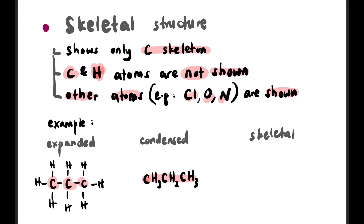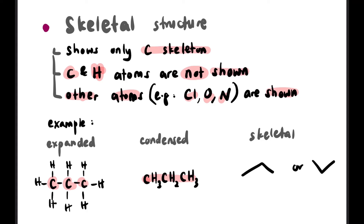Here's an example: in expanded structure we see C-C-C with H at the ends. In condensed we simplify it. For skeletal with 3 carbons, we draw a zigzag: 1, 2, 3 — up-down or at an angle. Every vertex or endpoint represents a carbon. You cannot draw it as a straight line with no vertices — there must be corners to indicate each carbon.